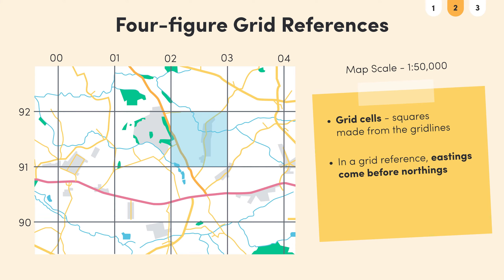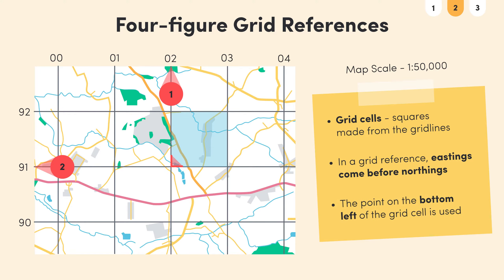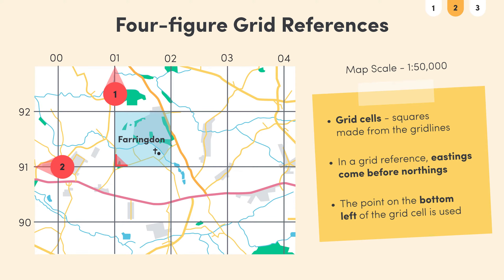When given any grid reference, the Eastings are given first, followed by the Northings. In the case of a four figure grid reference, the point on the bottom left of the grid cell is used to find the reference. For example, in this map with a scale of 1 to 50,000, the church in Farringdon lies in this box here. To find the four figure grid reference, the bottom left corner of the square lies on the Easting 01 and the Northing 91, so its grid reference is 0191.